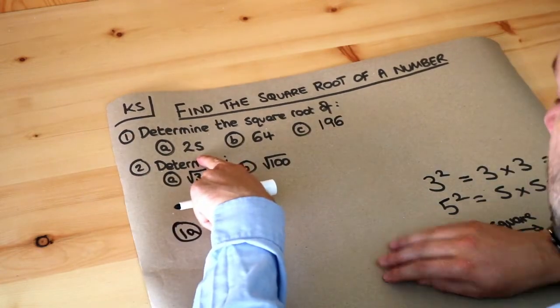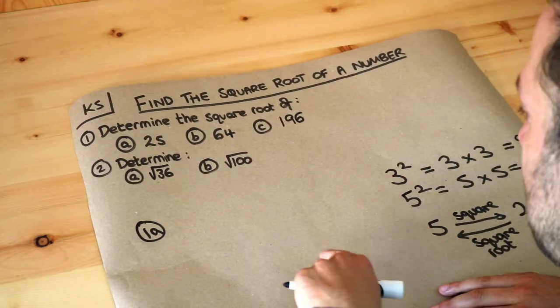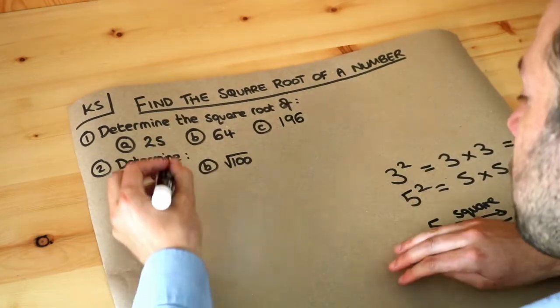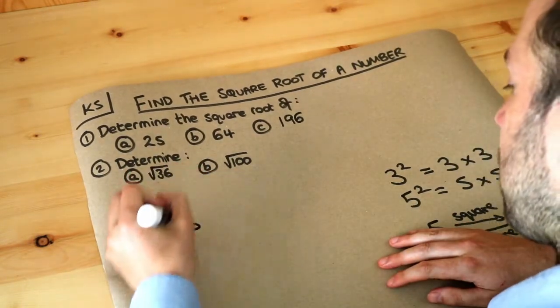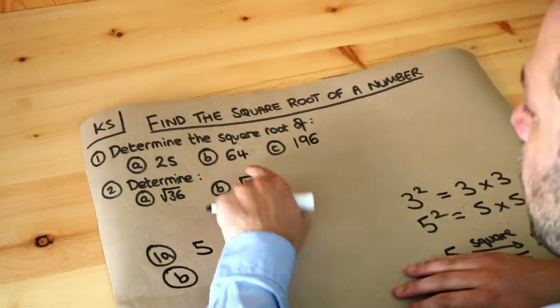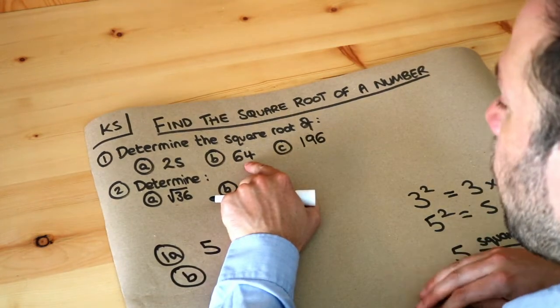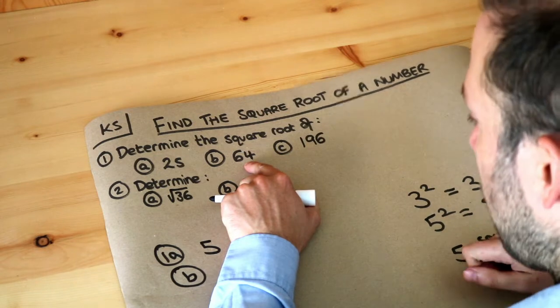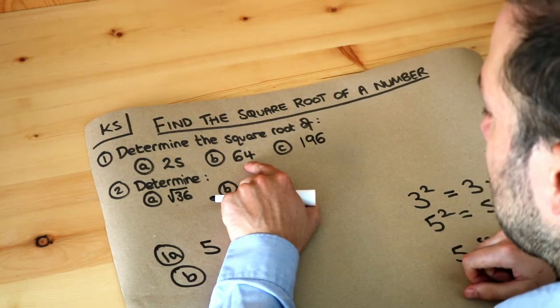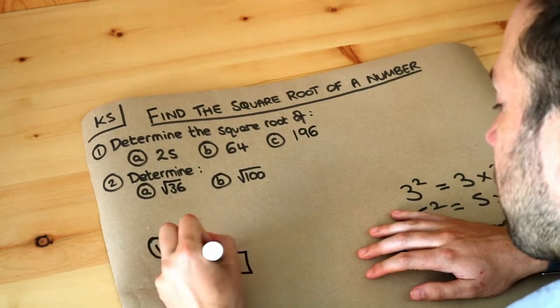So that answers the first question. The square root of 25 is 5, because 5 squared gives you that 25. What about the second one? The square root of 64, we need to think what number squared gives you 64. So if I draw that diagrammatically,